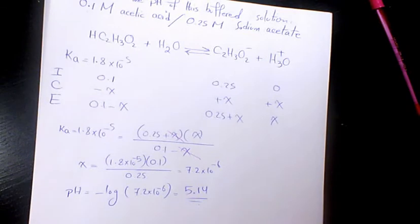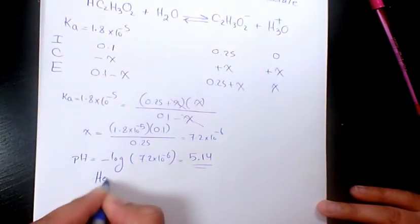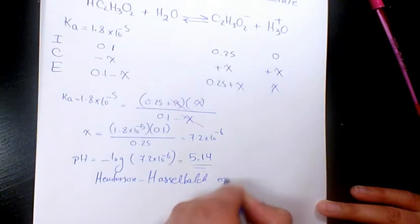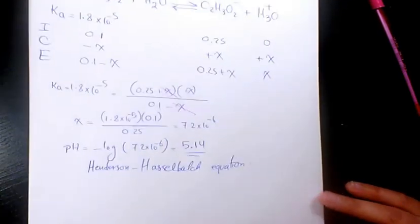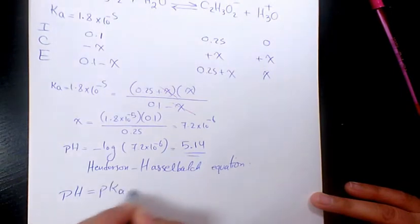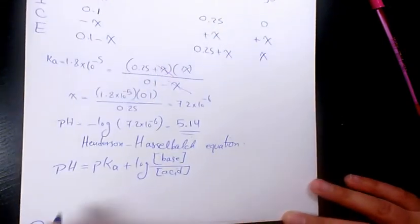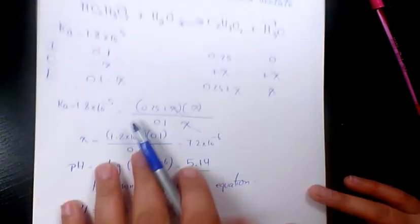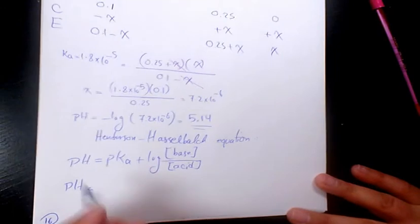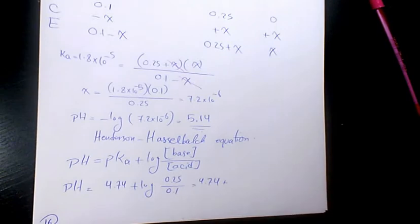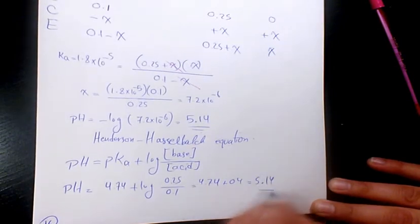I could also use the Henderson-Hasselbalch equation — that's the shortcut. I don't really like to use it, but it's an alternative method. pH = pKa + log([base]/[acid]). pKa = −log(1.8 × 10⁻⁵) = 4.74. Plus log(0.25/0.1), which gives 0.4. So pH = 4.74 + 0.4 = 5.14 — the same number.